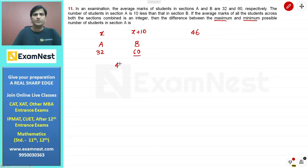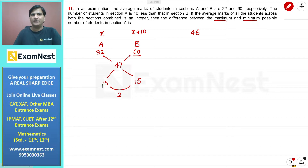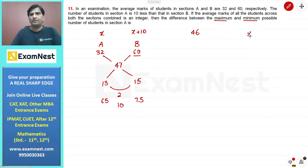क्योंकि M एक integer है, हम इसे 47 लेते हैं। Allegation की basic property: differences लेकर opposite side लिखते हैं — यह हो गया 13 और यह 15। इन दोनों का difference 2 है। अगर difference 10 हो जाए, यानि 5 times, तो यहां पर 65 students और 75 students हो जाएंगे। तो x की highest possible value है 65।